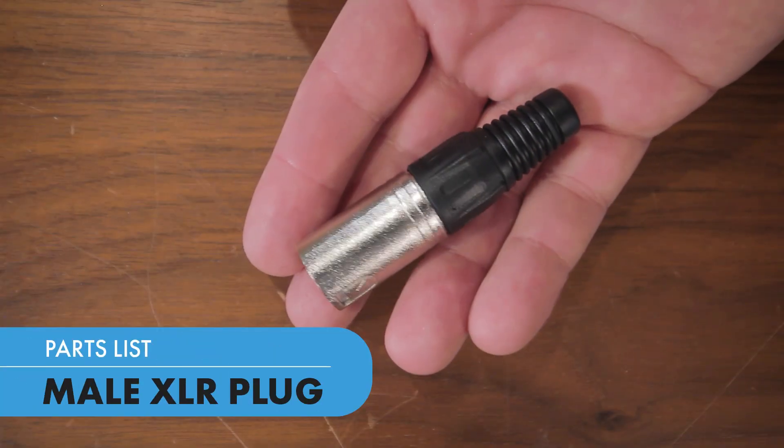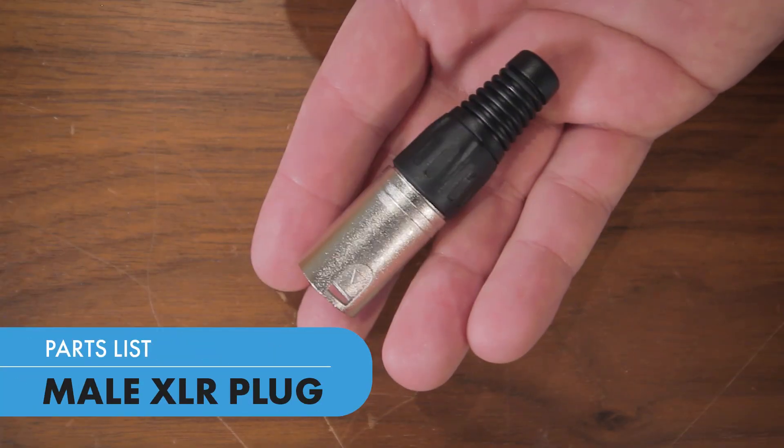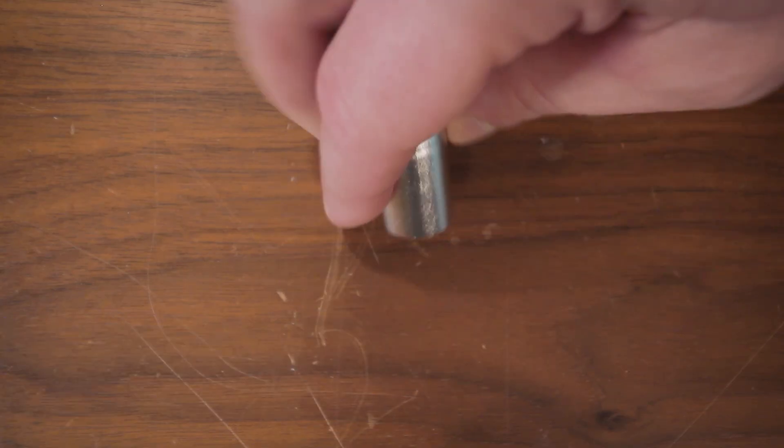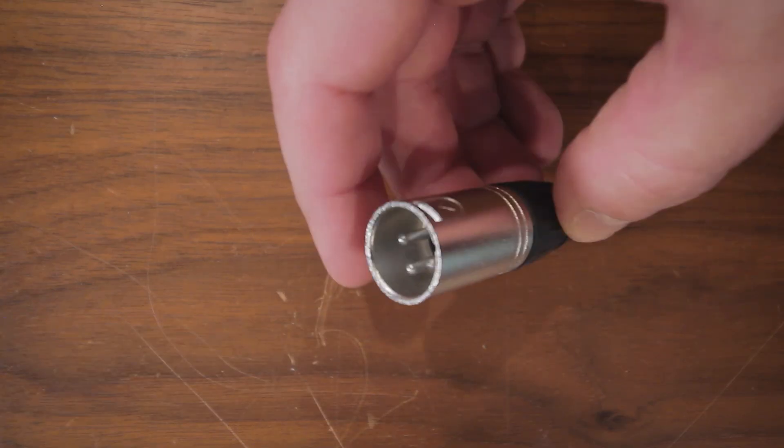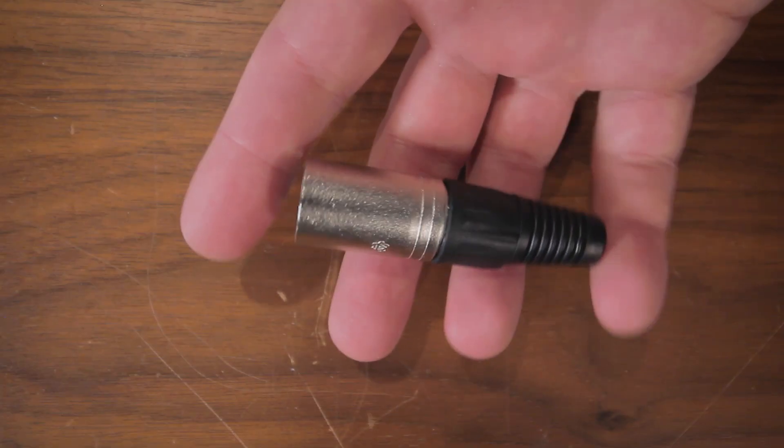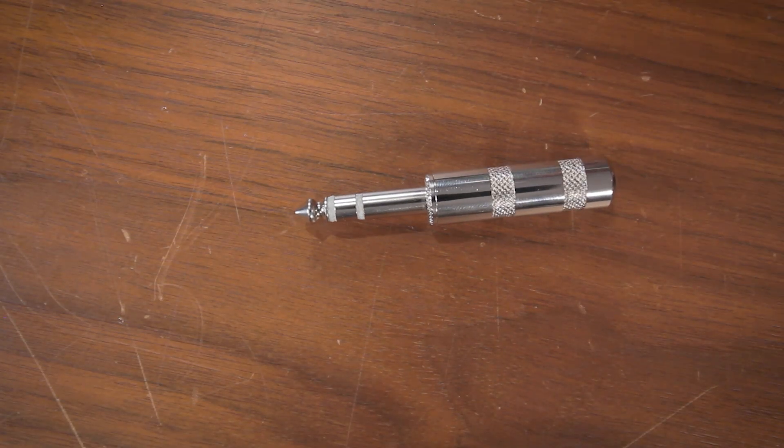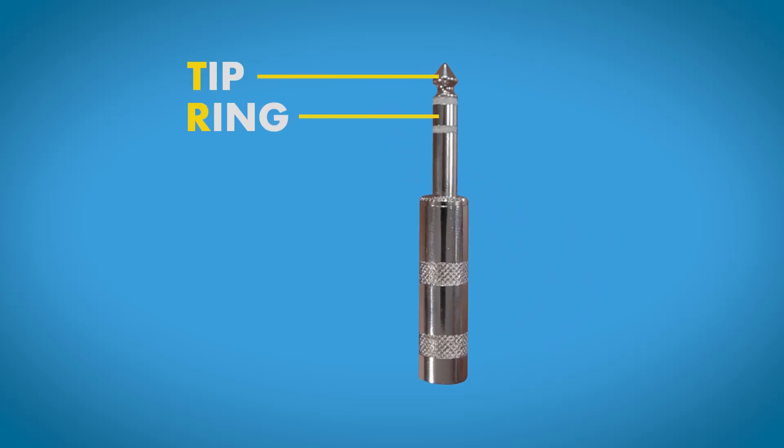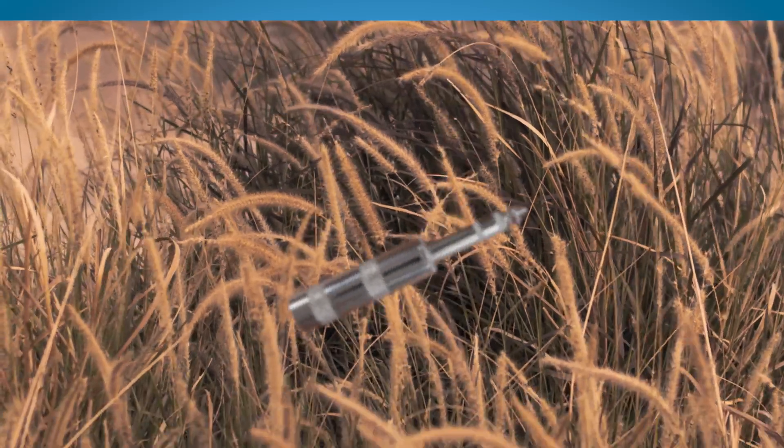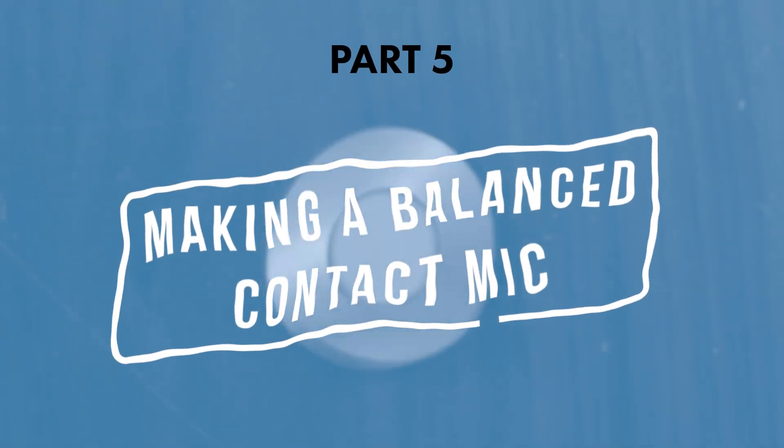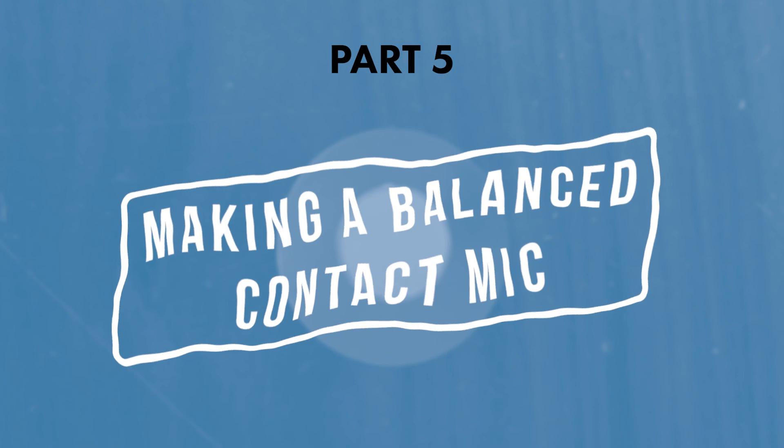Which brings us to the third item that we'll need which is an XLR plug. Now there are high-end XLR plugs but if you're just getting started these very basic models will work just fine. One other connector you can consider for a balanced contact mic are these TRS plugs. In order to keep this video from getting too in the weeds, I'll save these for a later episode. Now that we have our supplies, let's make a balanced contact mic.